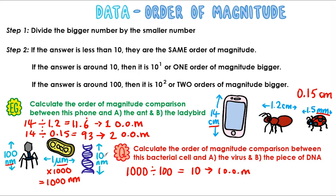For part B, the piece of DNA is 10 nanometres. So we're going to divide the 100 by 10, and this time it gives us 100, which just like before is going to give us two orders of magnitude bigger.